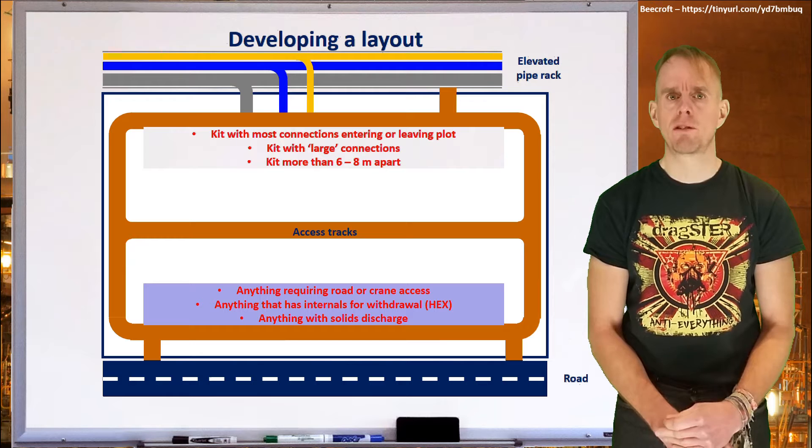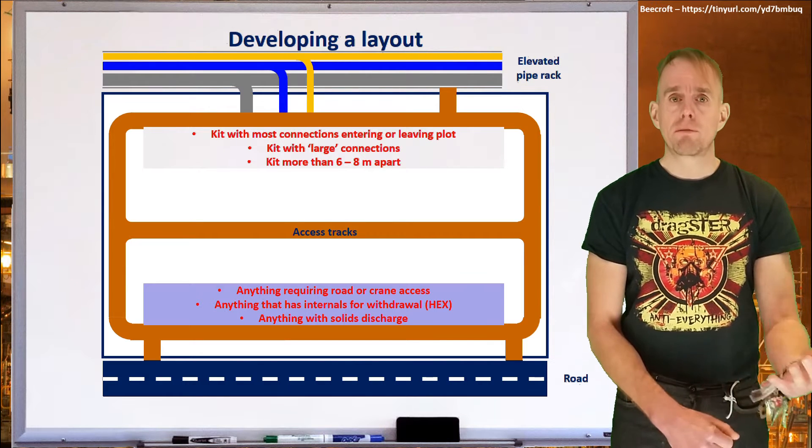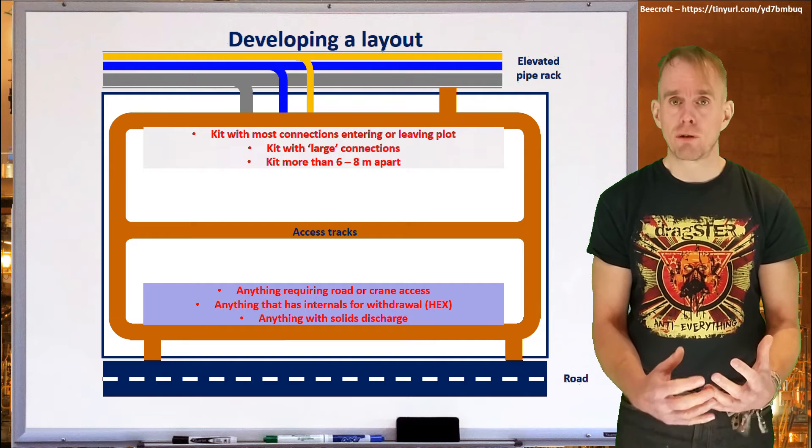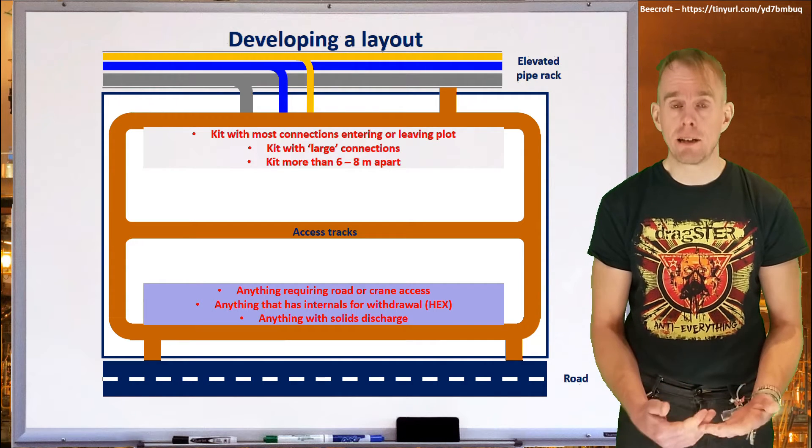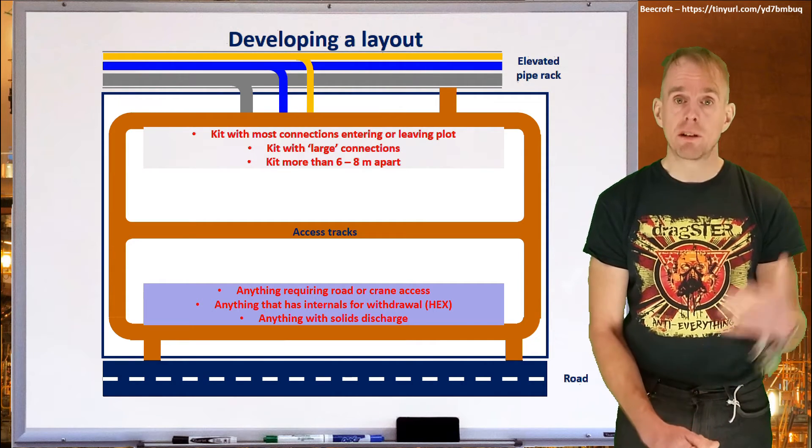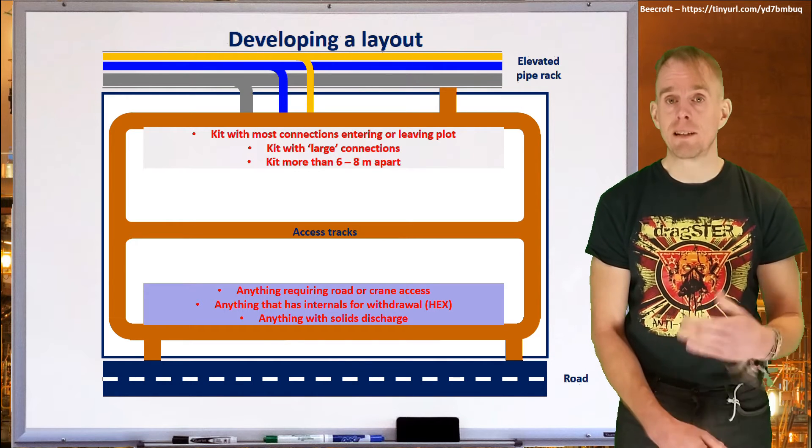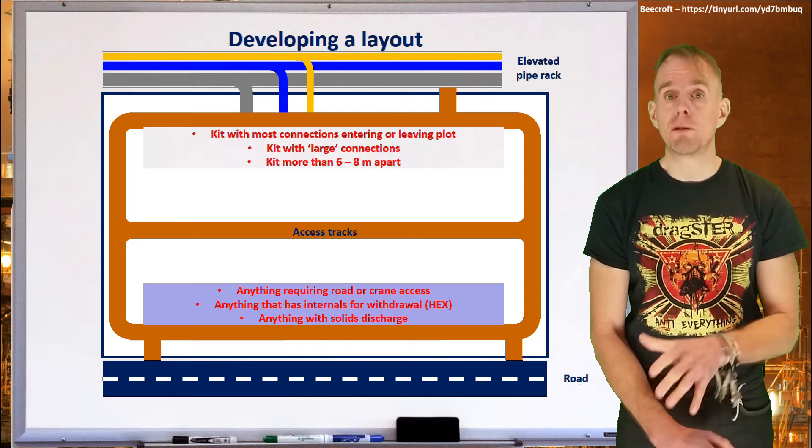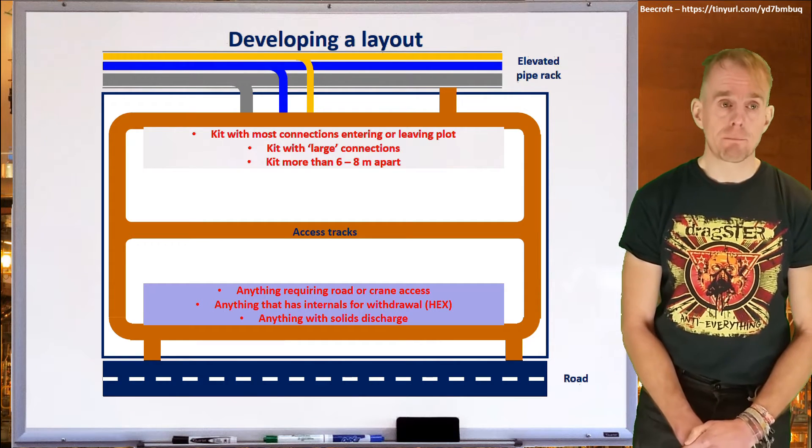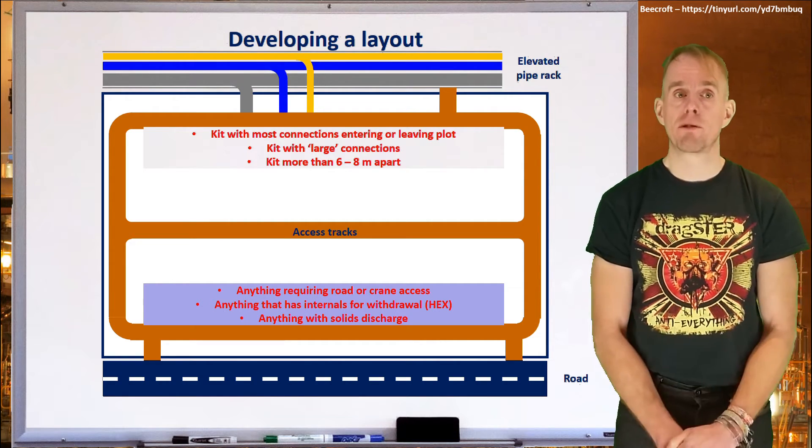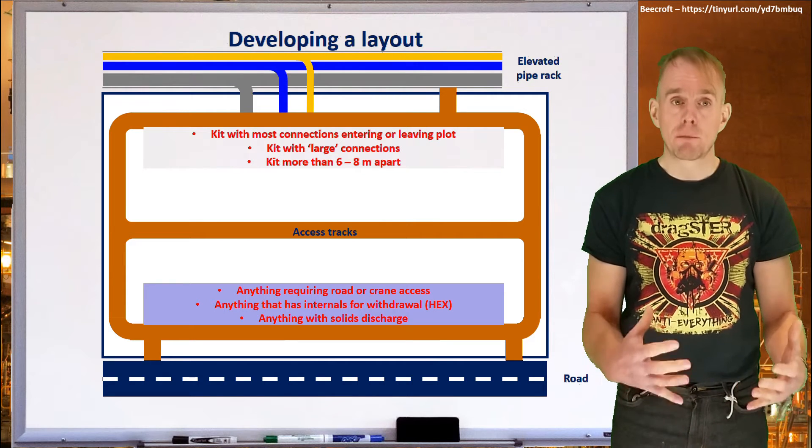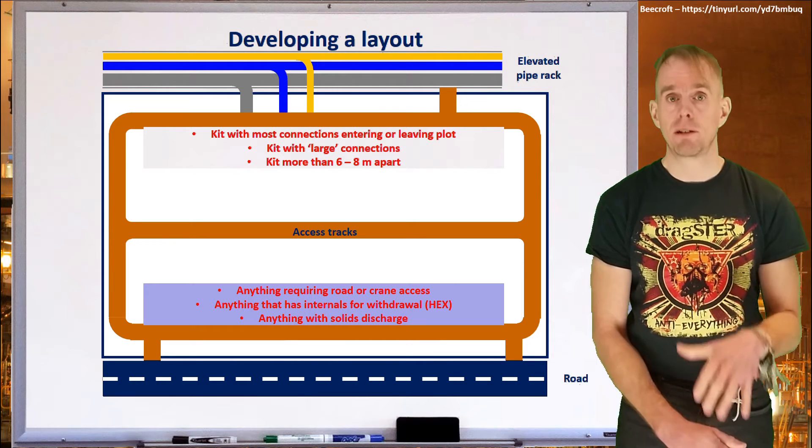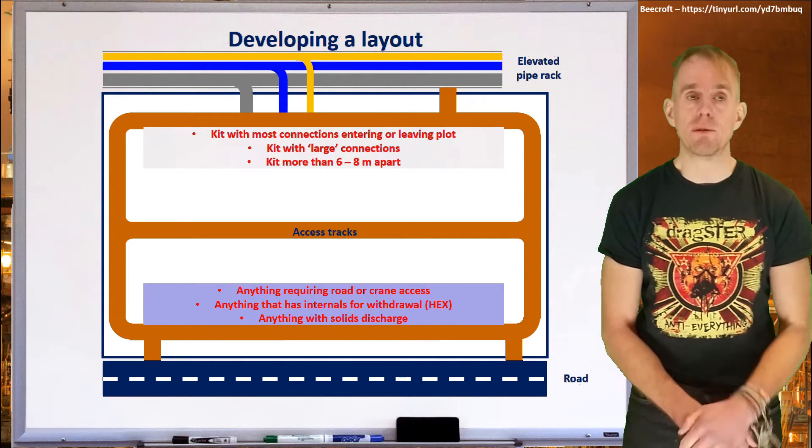If you've got items of equipment where you've got, for example, tube bundles to withdraw such as heat exchangers, again place them close to a road. Tube bundles are heavy, you're going to need to get lifting equipment in and very often these are going to need to be craned onto the back of a low loader to be taken away for maintenance elsewhere either on the site or maybe to a third-party vendor. Also, if you've got items of material with solids discharge, you're going to have to probably get those solids into transport to take them away. So again, place them close to a point where you can easily do that.